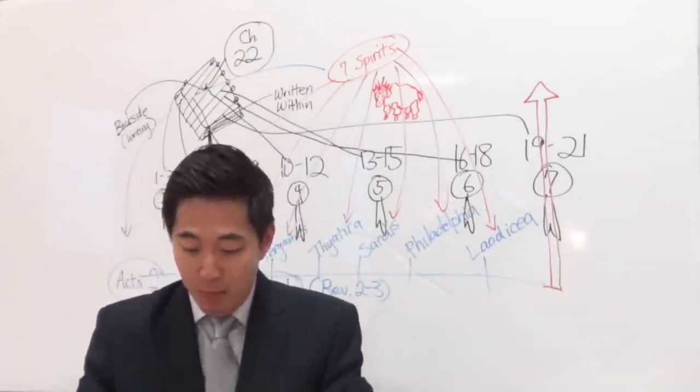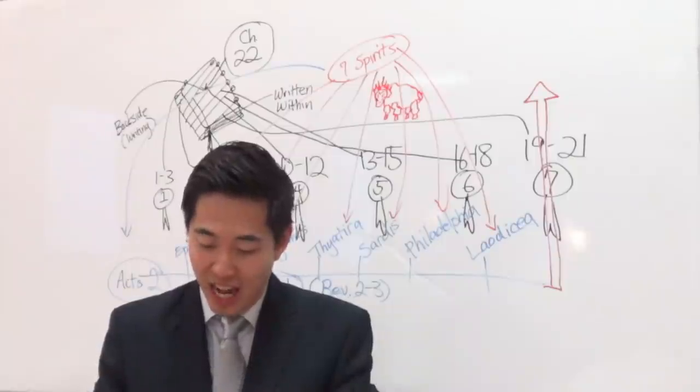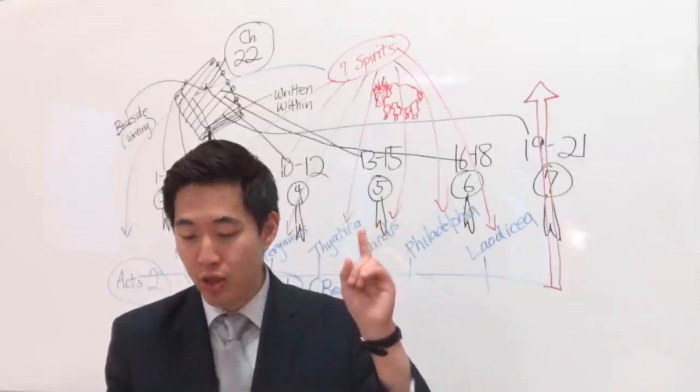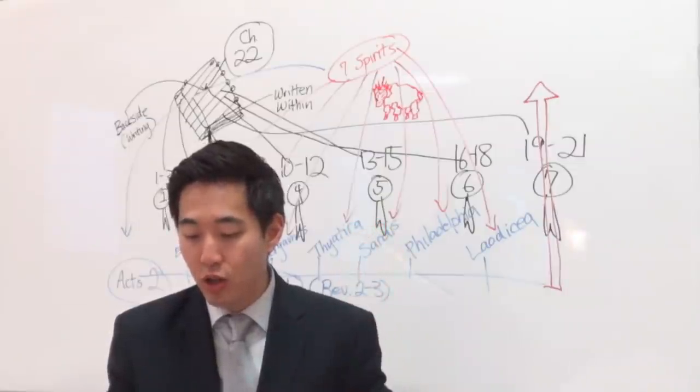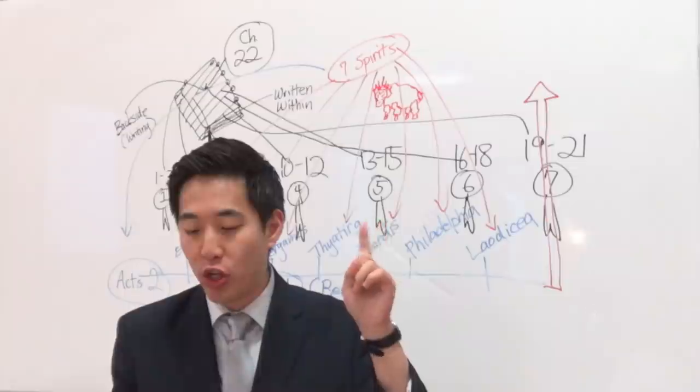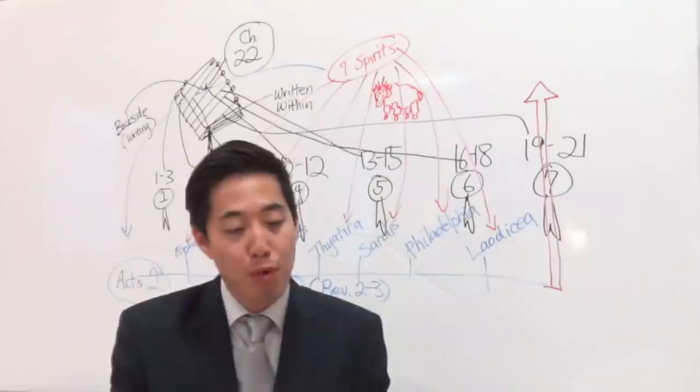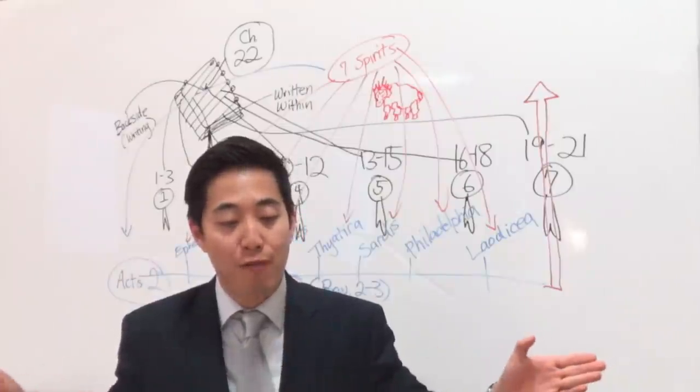And when he had taken the book, when he does that, you know what you and I are going to do? The four beasts, those four cherubim, and four and twenty elders, that's definitely the entire Christian church, and can include those Jews, fell down before the Lamb. They bowed down before him.